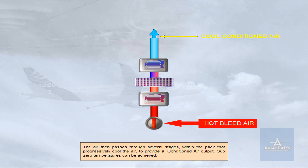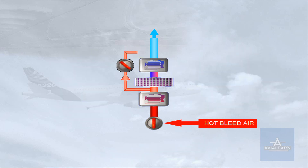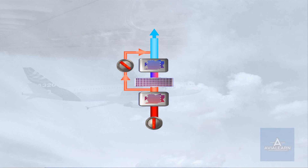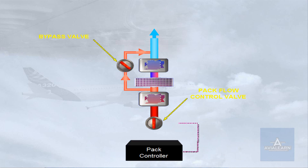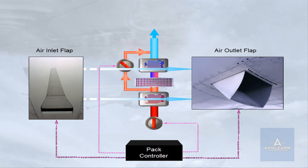Sub-zero temperatures can be achieved. Two of the stages are heat exchangers. They cool the hot bleed air using the flowing ambient air. This flow of air enters via the ram air inlet flap and exits via the ram air outlet flap. So that the output temperature of the pack can be adjusted, a bypass valve is fitted. This valve allows warmer air to be mixed with the cold air. The pack flow control valve and the bypass valve are regulated by a pack controller to vary the flow rate and the output temperature. The pack controller also controls the ram air inlet and outlet flaps to adjust the amount of air blowing through the heat exchangers. Note: the ram air inlet flaps close during takeoff and landing to avoid ingestion of foreign matter.